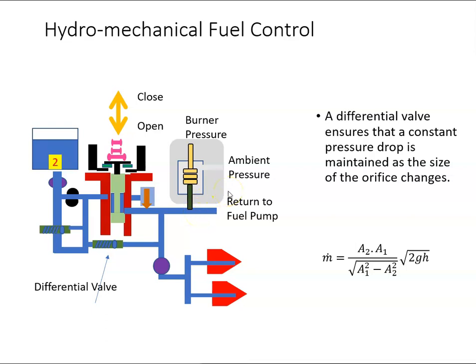I'm going to explain the basic operation of a hydromechanical fuel control unit. We have fuel in the fuel tank of the aircraft. A booster pump inside that tank brings the fuel into the engine, where it must first pass through a low pressure valve, then through a pump, and there will be a filter, along with some heat exchanging as well. The fuel then comes into the HMU.